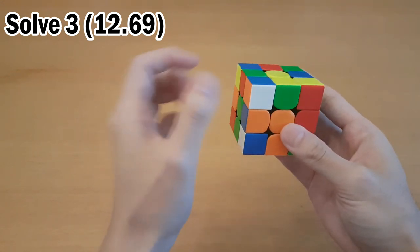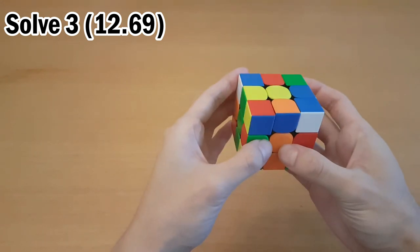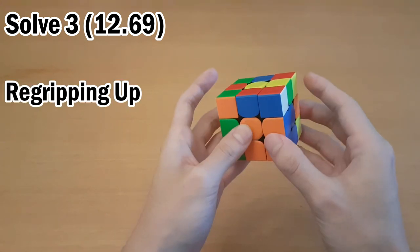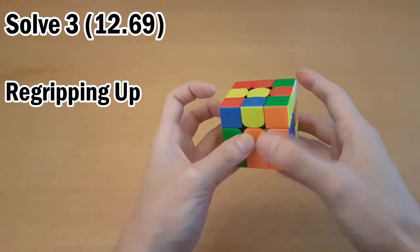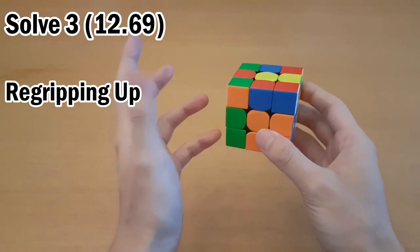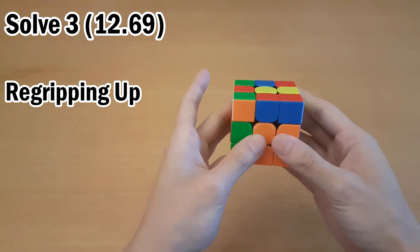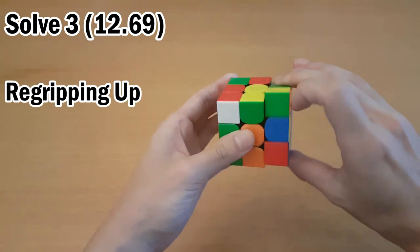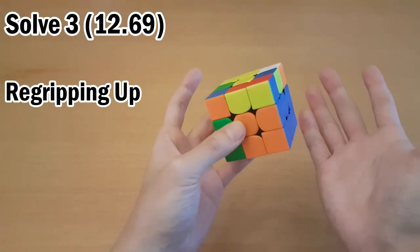Then first you had orange and blue, so you set them up like this and then inserted. Then red and blue, so what you did here was move them to the back, re-grip to insert. This is the most common way to do it, although you could avoid a re-grip from here if you move it over to the left side first and do R' U2 R, and it's still the same number of moves.